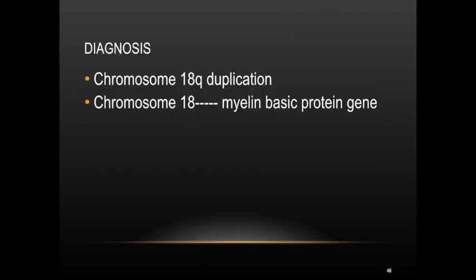This child was shown to have chromosome 18Q duplication. Interestingly, chromosome 18 carries the myelin basic protein gene, which is an important protein that is part of myelin. And therefore, you have no real normal myelin in the brain. This is how knowing the normal pattern of myelination can be really useful in diagnosing hypomyelinating disorders. Everyone should be aware of this particular pattern of normal myelination in a child from the neonatal stage to the adult pattern of myelination. Thank you very much.